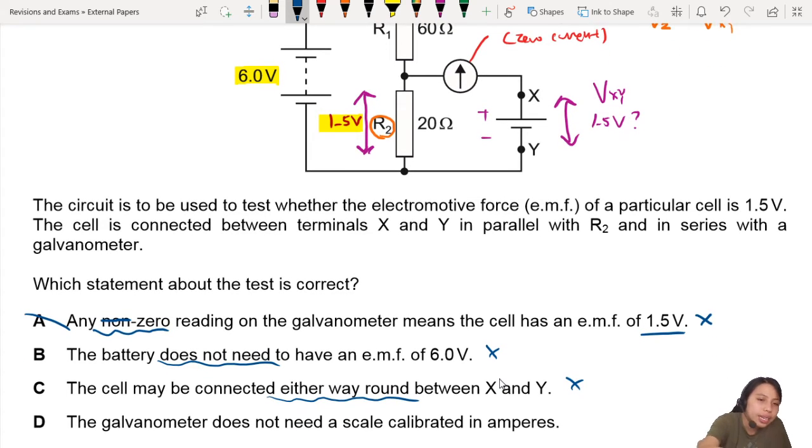D: The galvanometer does not need a scale calibrated in amperes. What is a galvanometer? It detects charge flowing. If there's charge flowing, the needle will point. If it's pointing up, that means no current. If the galvanometer is pointing to the left, that means there's current flowing from right to left. You don't really need to know how many amperes of current though. You just need to know is there current or no current. We don't need amperes - we just need to know deflection or no deflection. So the best choice here will be D for this potentiometer question.